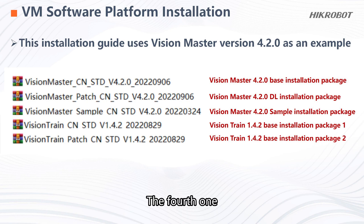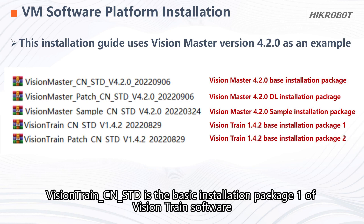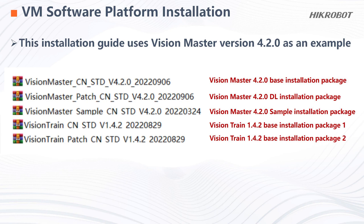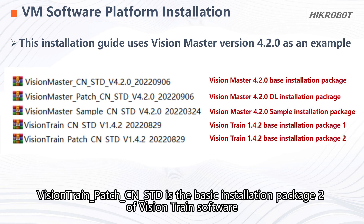The fourth one, VisionTrain CNSTD, is the basic installation package one of VisionTrain software. The fifth one, VisionTrain Patch CNSTD, is the basic installation package two of VisionTrain software.